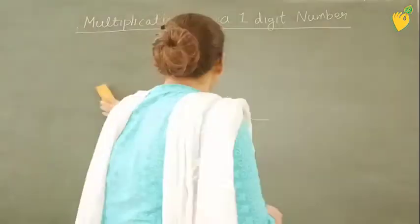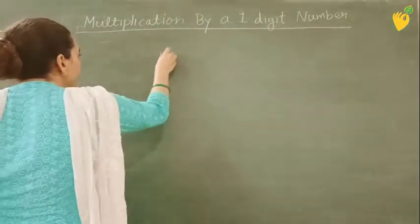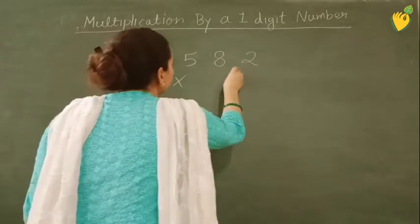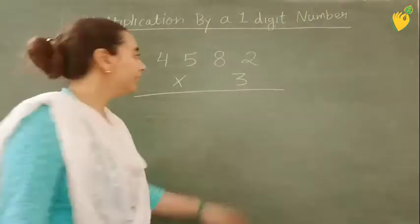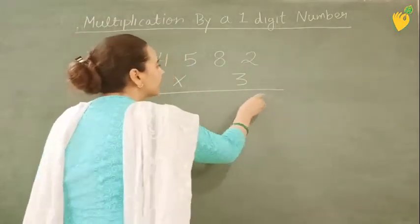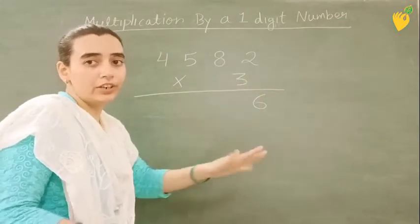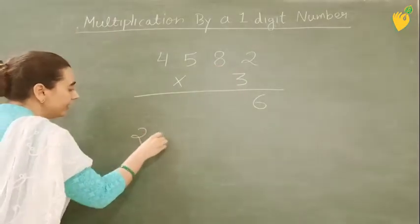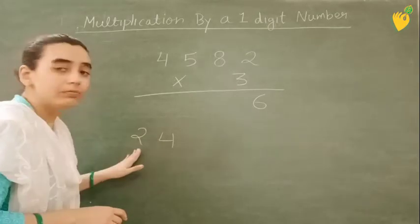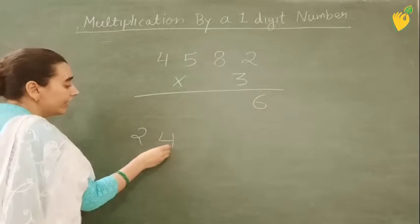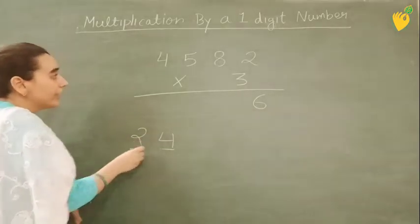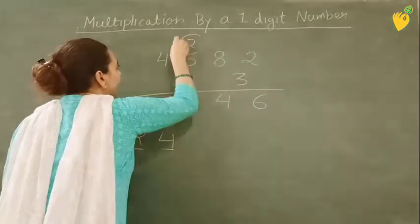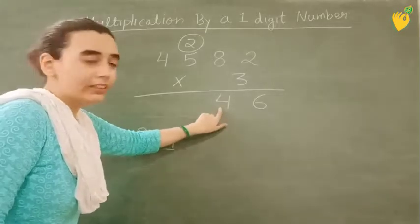Now another example I am writing. 4582 multiplied by 3. So 3 2's are 6. Now 3 8's are 24. Now see the product which we are getting is 2 digits. 3 8's is 24. It is in place of 1's and it is in place of 10's. This 4 will be right here. And this 2 we will put carry here. 24 is 4, and 2 is carry.